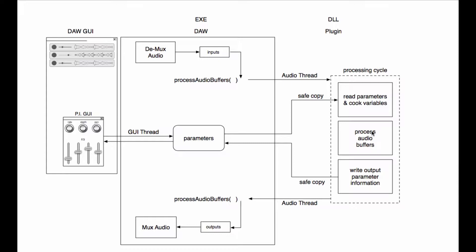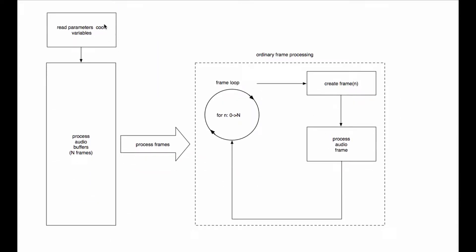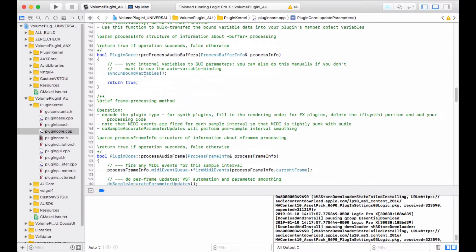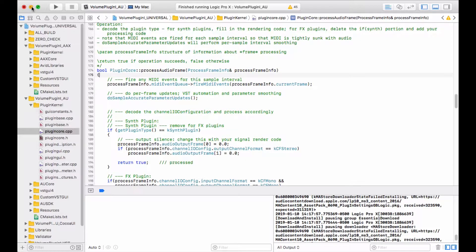Although all audio processing is done in buffers in the plugin shell, in the plugin core we're going to process everything in frames. A frame is one sample from each channel, so a stereo frame has a left and a right sample. When we do frame processing, we read the parameters and cook the variables in step one. In step two, we process the audio buffers by breaking them into N frames and going through a for loop, calling the process_audio_frame function one time for each frame. That process_audio_frame function is in our project and we will have to go into that code.